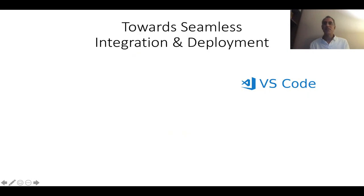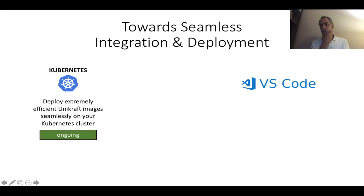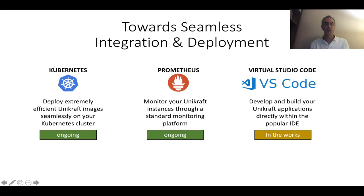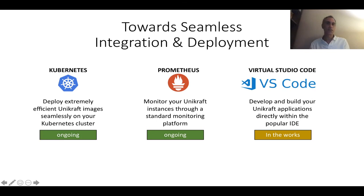We'd like to go towards seamless integration and deployment. To do this, we are integrating into a few major frameworks. The first one is Kubernetes — we have this almost working but it's not public yet, where we can directly plug into Kubernetes using standard kubectl commands and the standard dashboard, but underneath we're actually creating and running Unicraft unikernels. For monitoring, we now have support for Prometheus in Unicraft, so you can use your standard Prometheus dashboards to monitor the statistics and runtime of Unicraft. And we're in the process of integrating Unicraft into Visual Studio Code, so you can do your development and building of unikernels directly from the IDE.